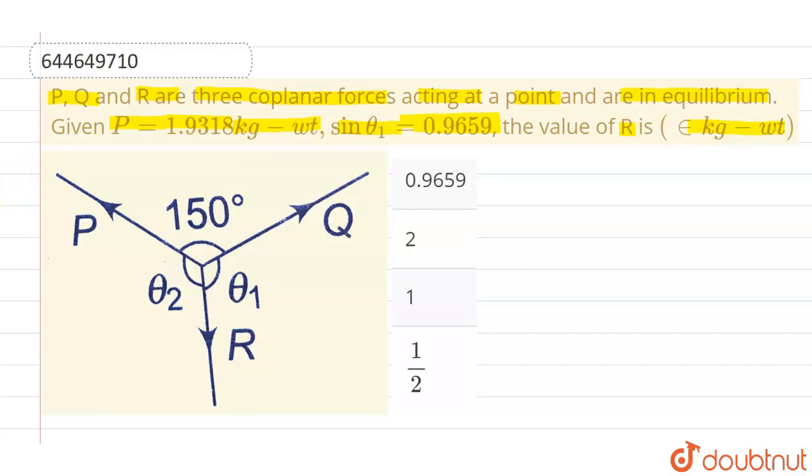Now we know that whenever three coplanar forces which are acting on a point are in equilibrium, then I can say that these follow sine law, which means P by sin θ1, this will be equals to Q divided by sin θ2, and this will be equals to R divided by sin of 150 degree.